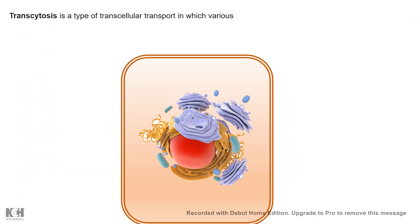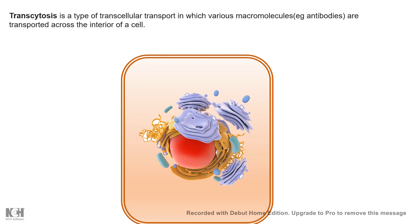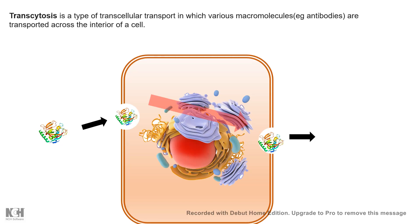Transcytosis is a type of transcellular transport by which various macromolecules such as enzymes, proteins, and antibodies are transported across the interior of the cell. On one side the proteins come in and get endocytosed, and from the other side they get exocytosed and released. This mode of transcellular transport is important for several secretory molecules.